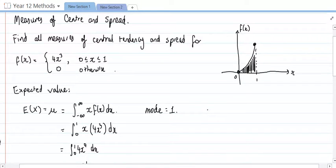So next I'm going to do the median. Now the median is the middle value, which means that it occurs when the sum of the probabilities is 0.5.